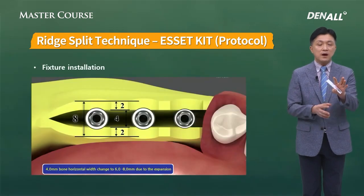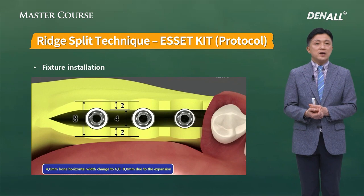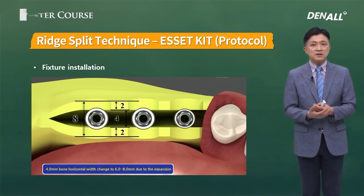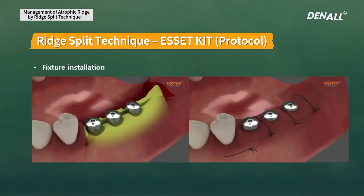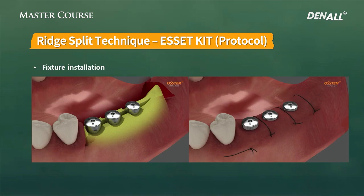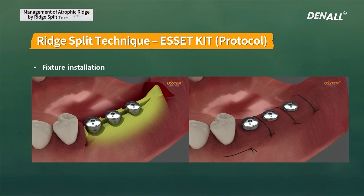On the buccal-lingual side, there should be 2 mm of bone left — this is how you should place the implant. If there is good primary stability, you can connect the healing abutment. In most cases you can get favorable primary stability, move on without doing a graft, and close the flap. In most cases, you do not need a vertical releasing incision; you can do this procedure with only a crestal incision, minimizing the operation field.